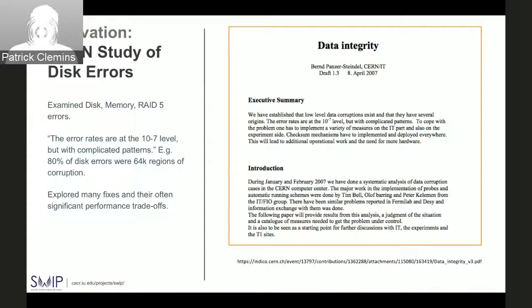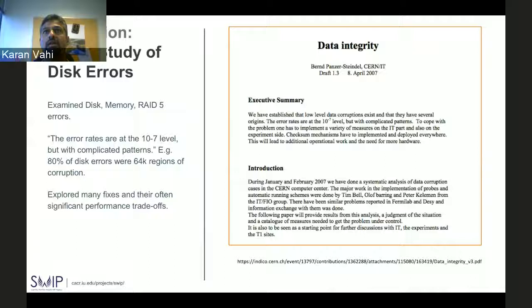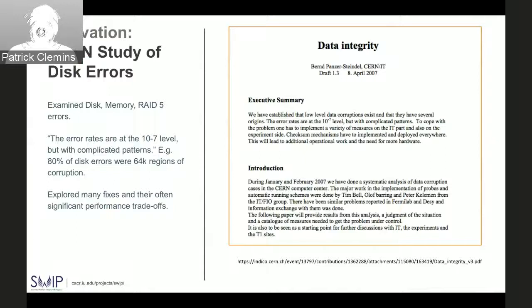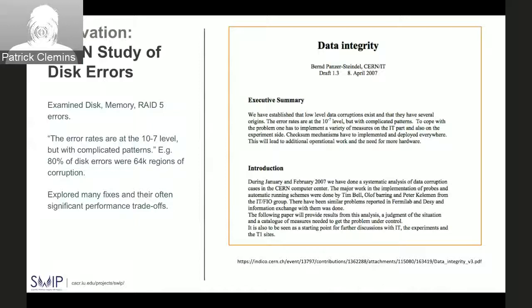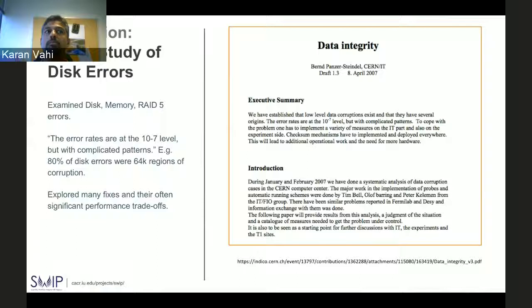One very popular study about disk errors at rest is a CERN study done in 2007 where they examined disk memory and RAID 5 errors. It found that disk errors can be introduced even at rest and they don't get checked. They explored many fixes, often with significant performance trade-offs, which leads us to believe that even once you have generated output datasets, silent corruption can happen over time.